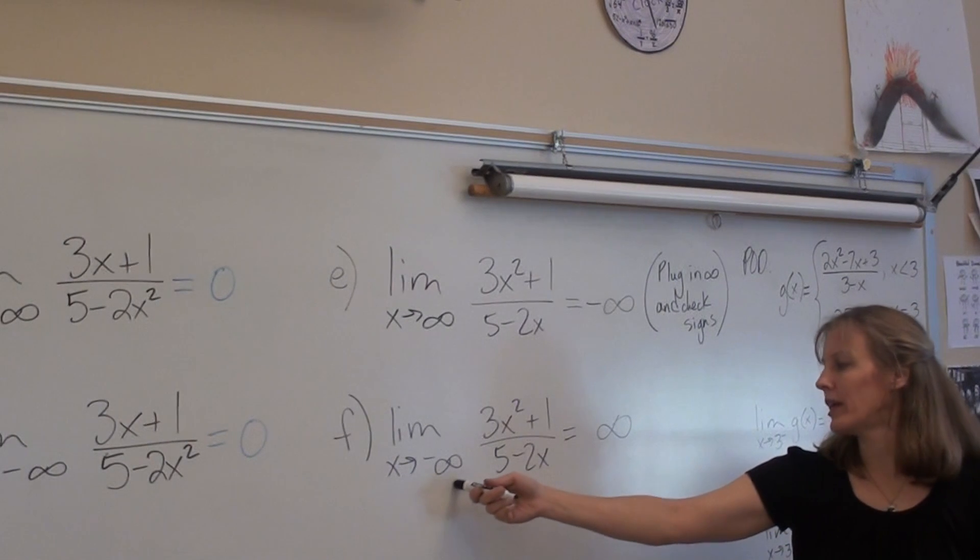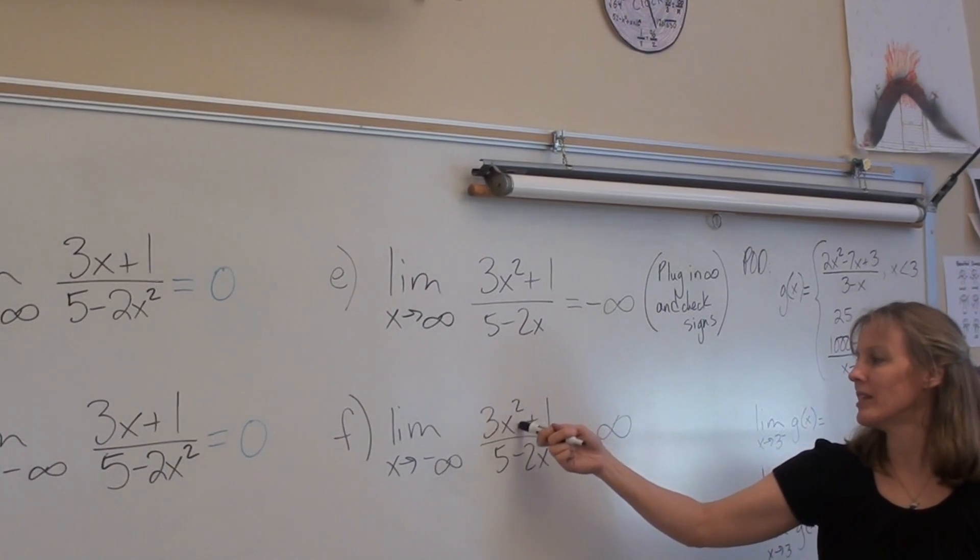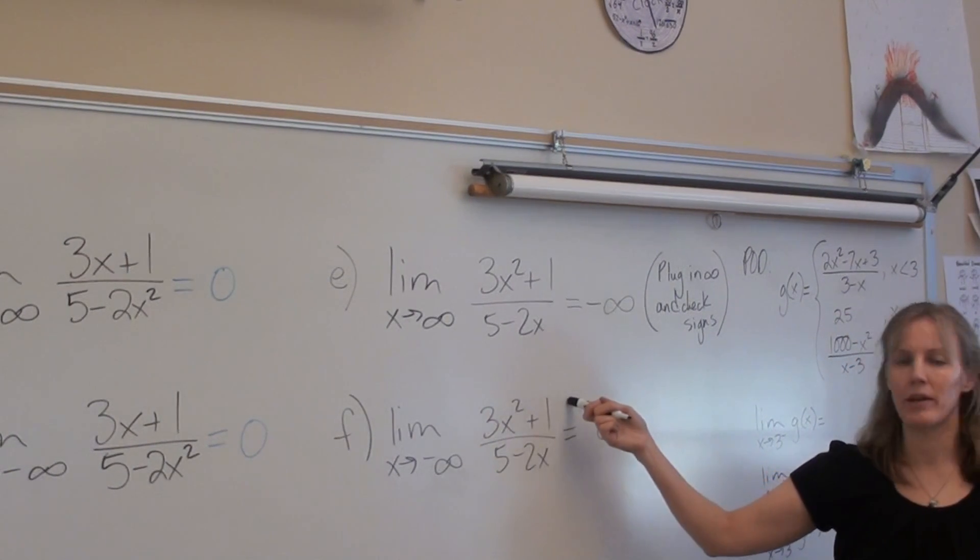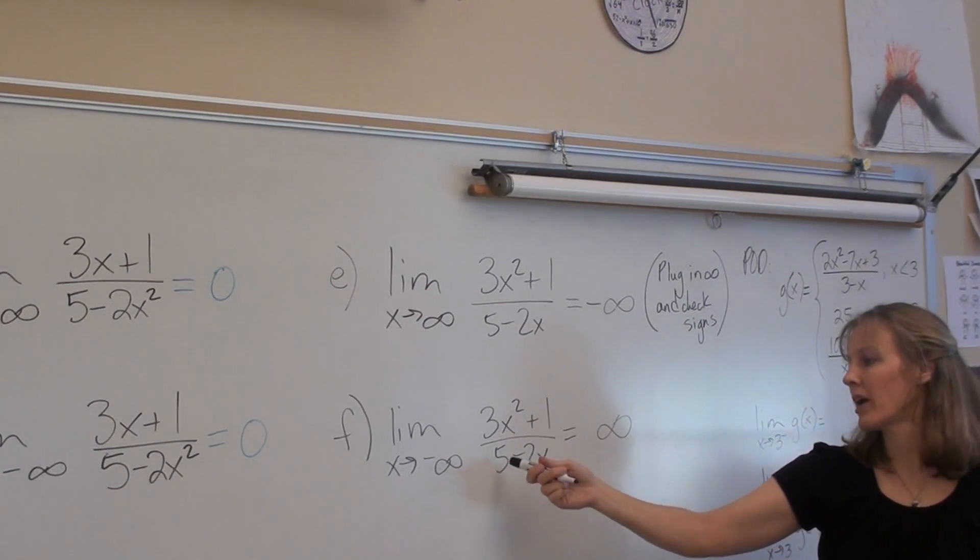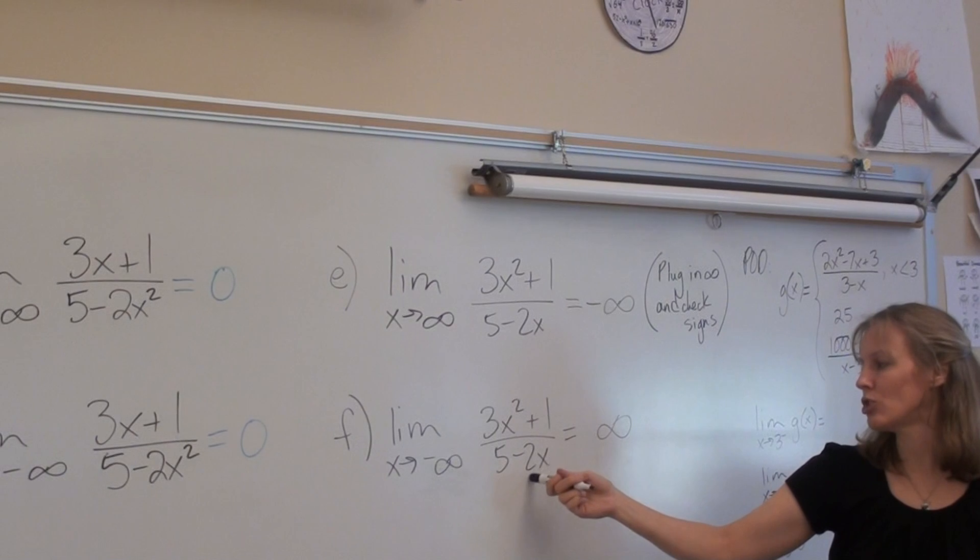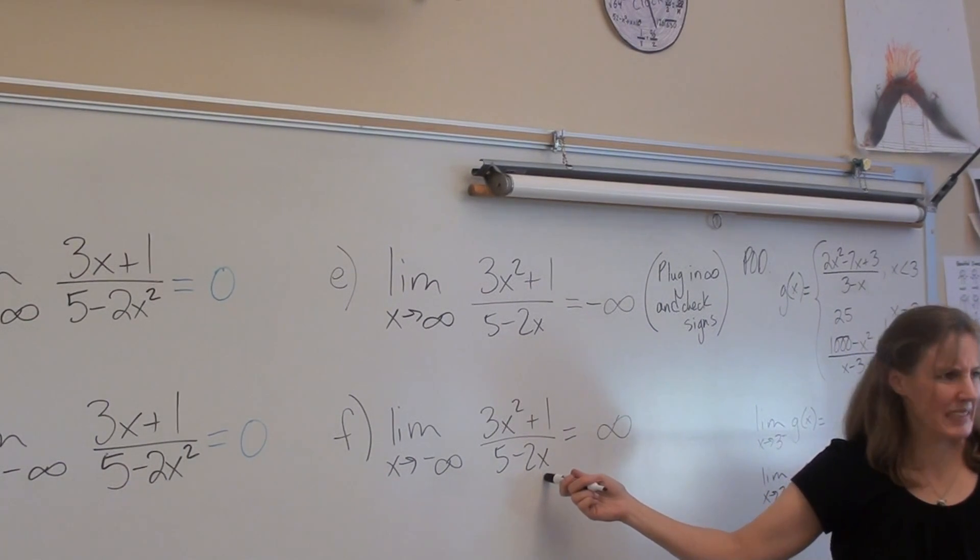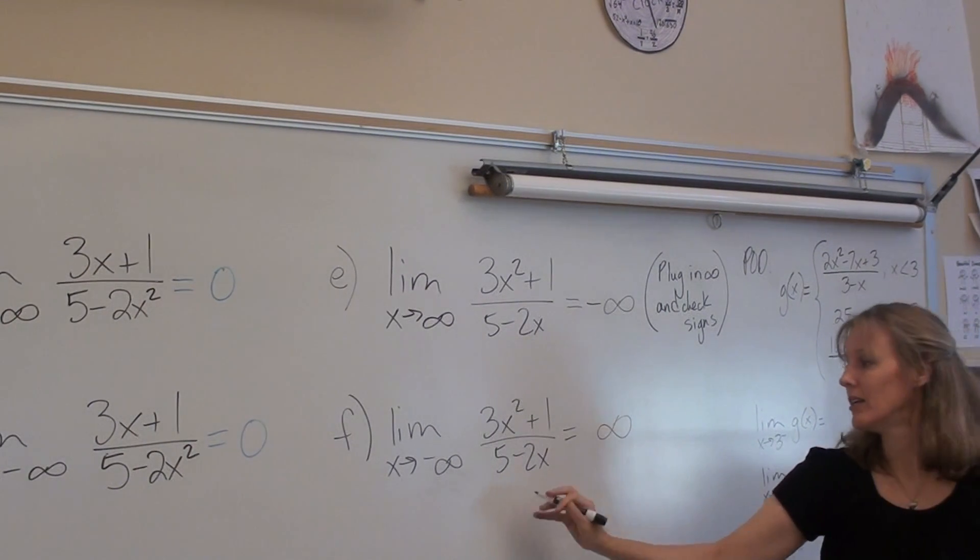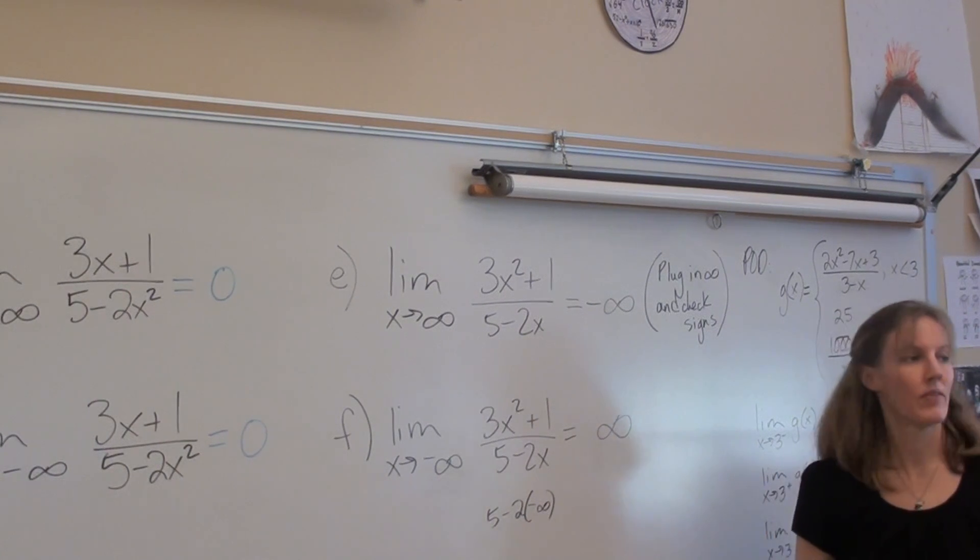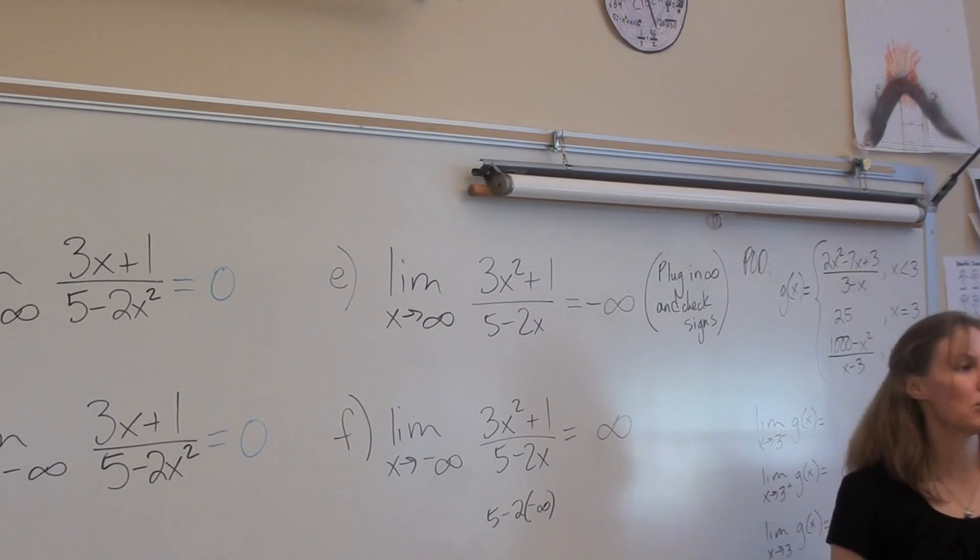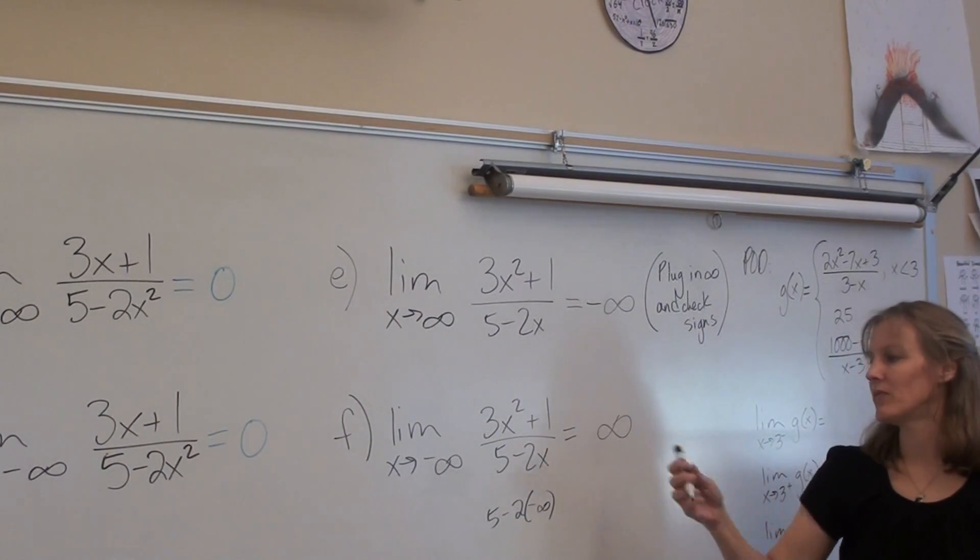For this one, I have 3 times negative infinity squared plus 1. What's that? Positive. On the bottom, I have 5 minus 2 times negative infinity. Five minus 2 times negative infinity. Think of it. It's the same thing as 5 plus 2 times infinity, right? It ends up being positive. If you get a positive over a positive, this one is positive.